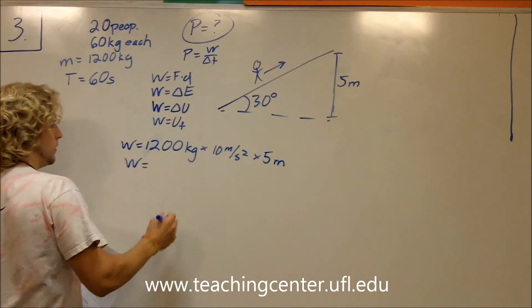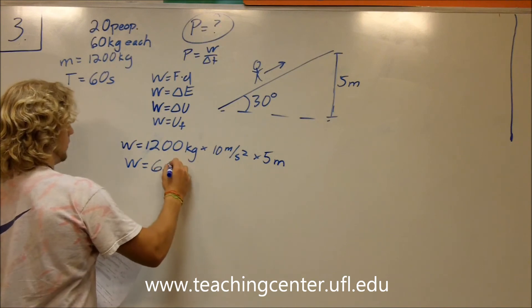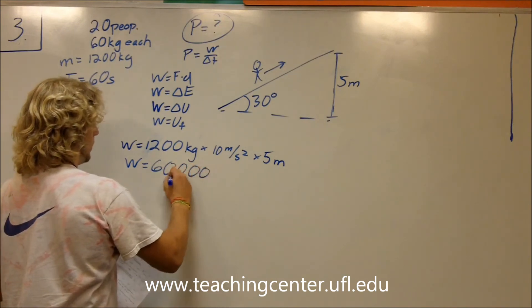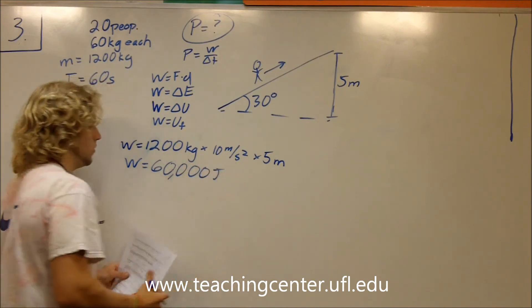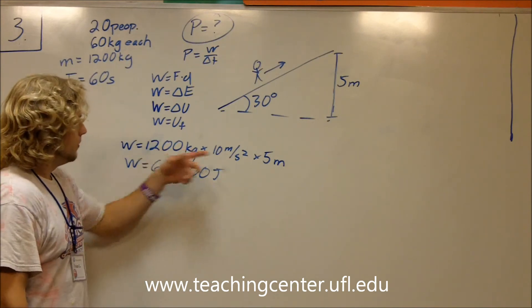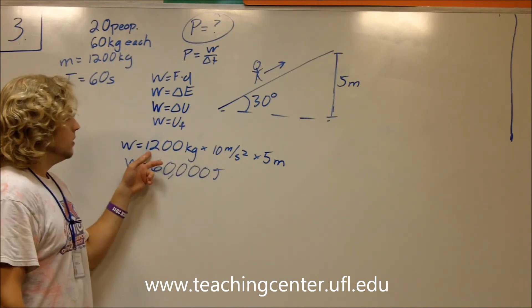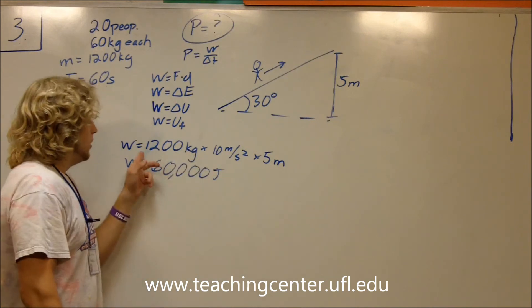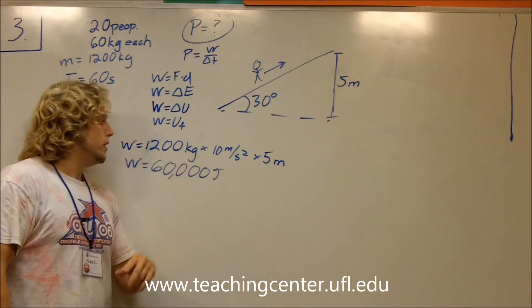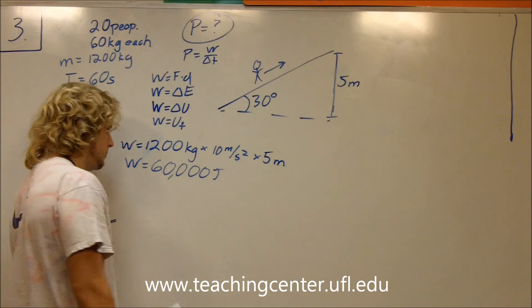So work is going to equal 60,000 joules. 10 times 1200 would be equal to 12,000 times 5, which is 60,000. Pretty simple.